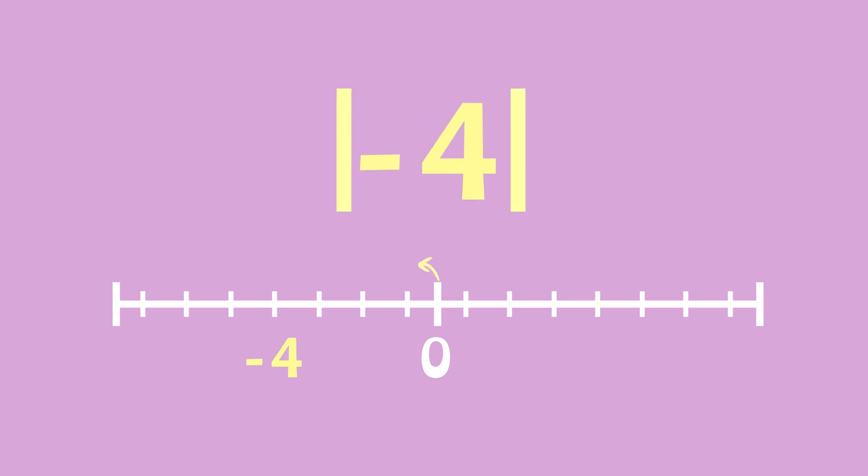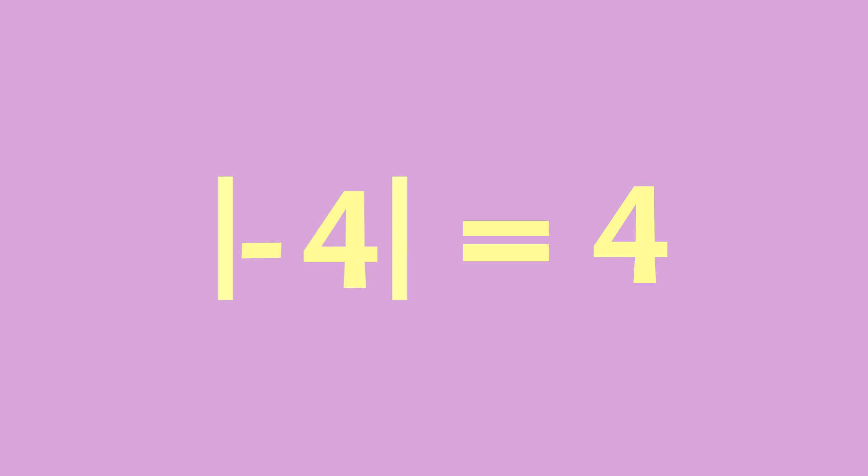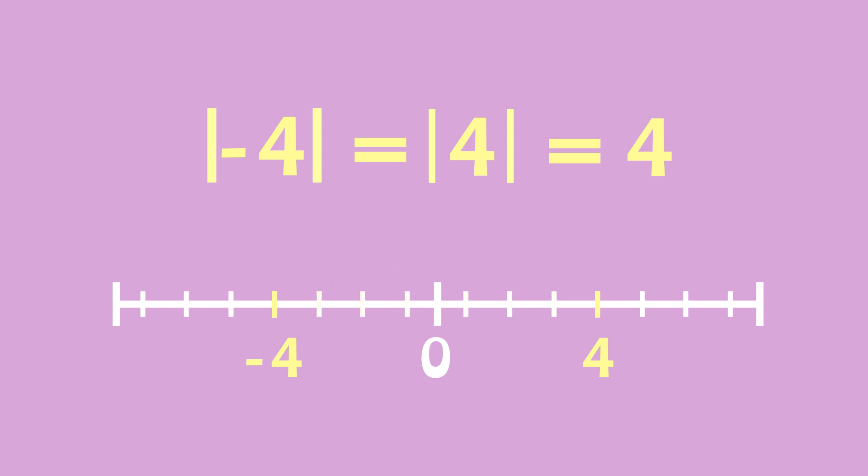Negative four is also four places from zero on the number line, so its absolute value is also four. Absolute value is always a positive number, because it's the distance from the other number, in this case zero, no matter the direction.